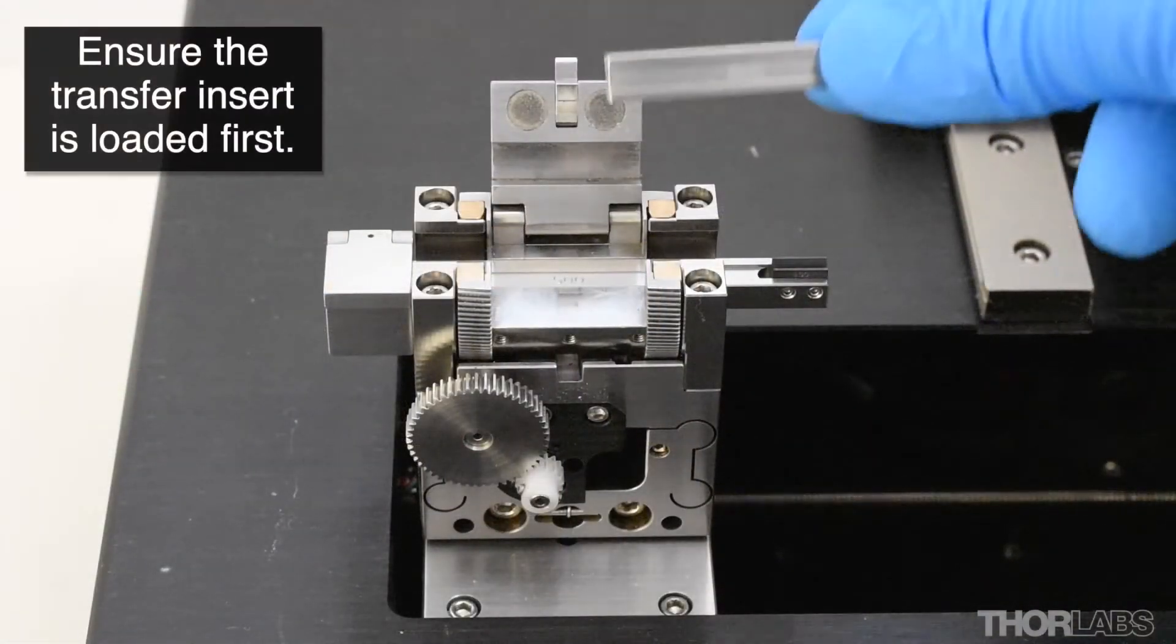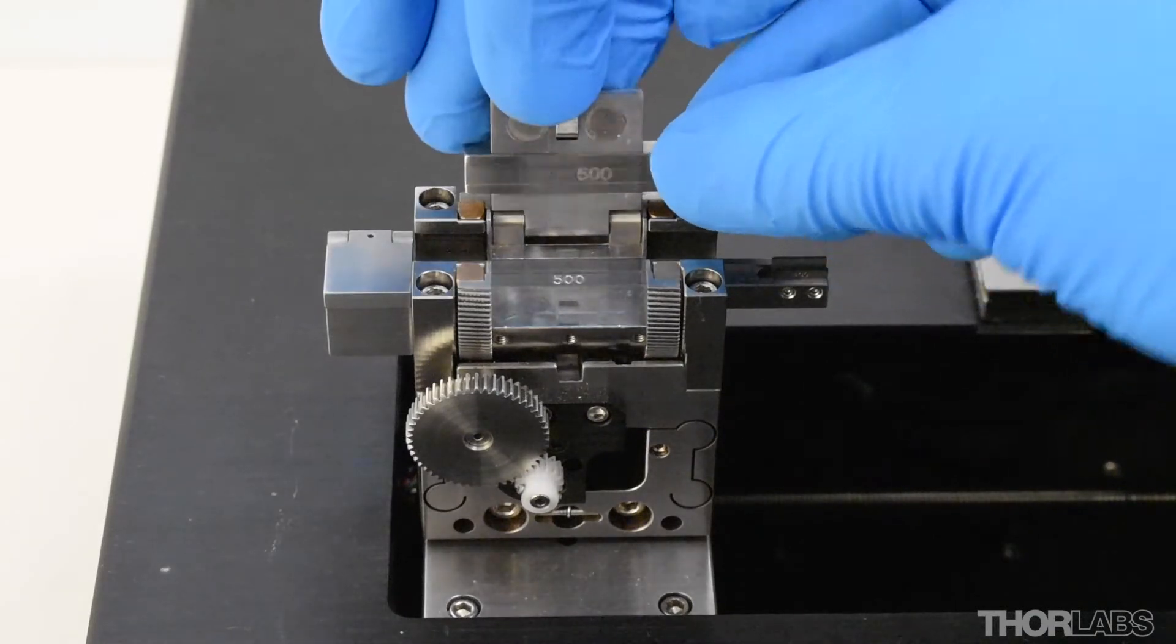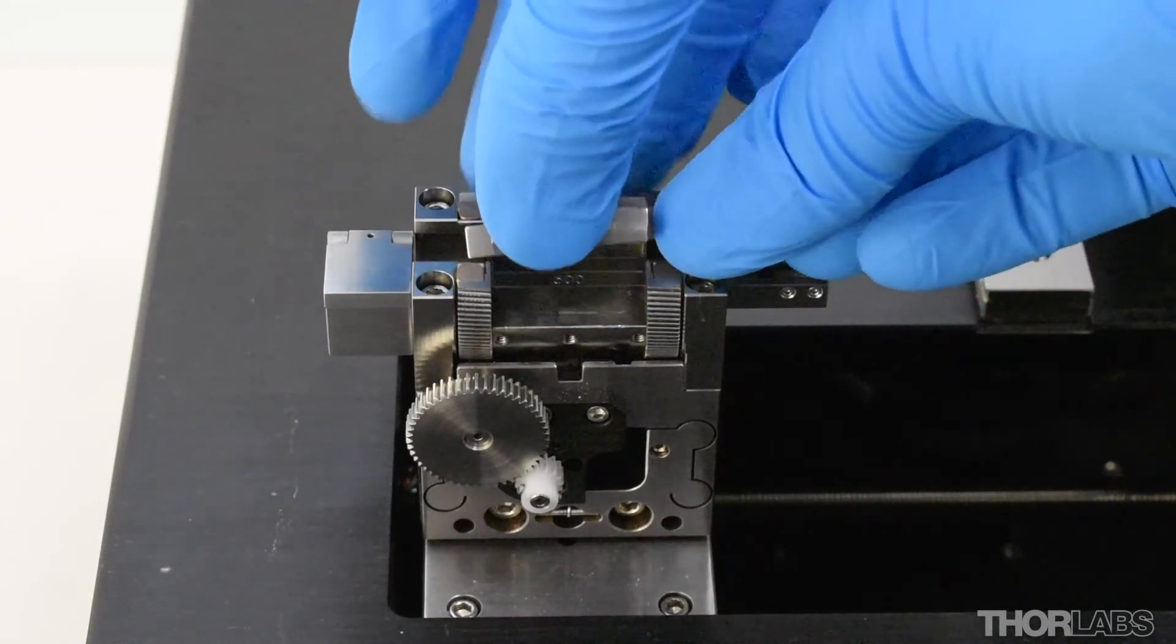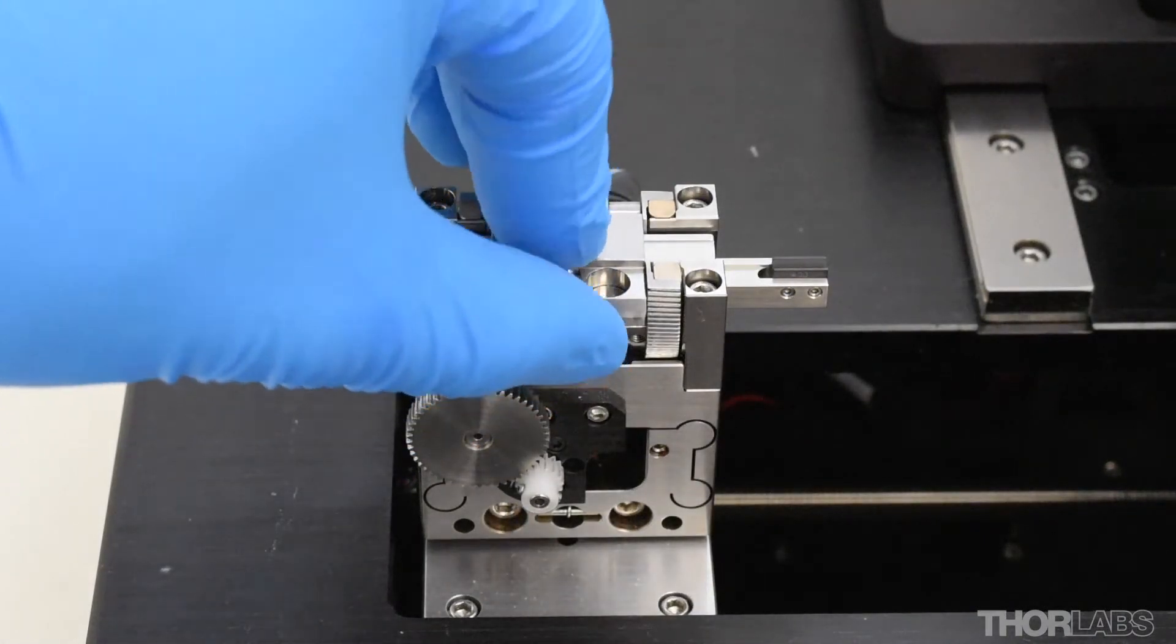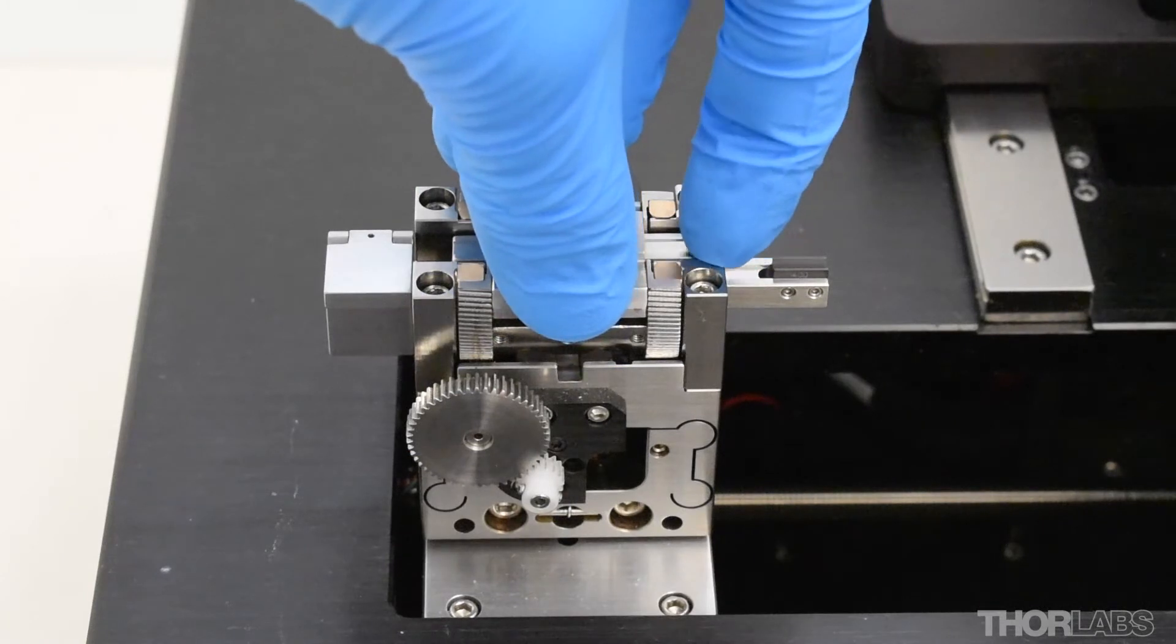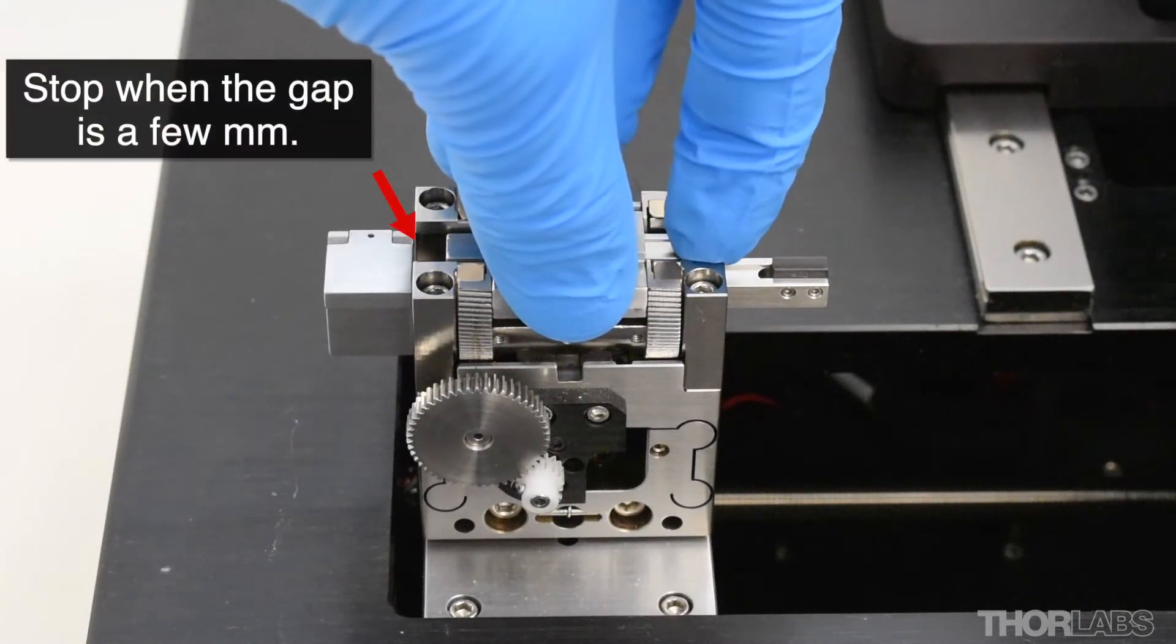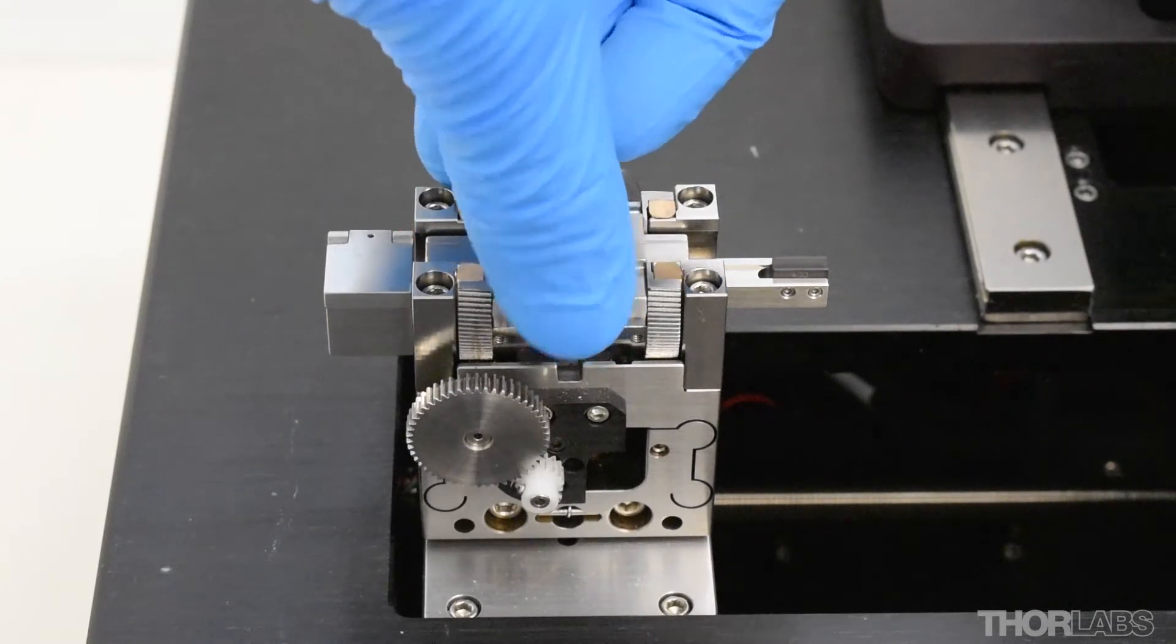Using the same method as described earlier, place the upper insert into the lid of the fiber holding block. Close the lid while holding onto the insert so that it stays in place. Now slightly lift the lid and slide the upper insert towards the transfer clamp. Stop when there is a gap of a few millimeters between them. Allow the lid to close fully.